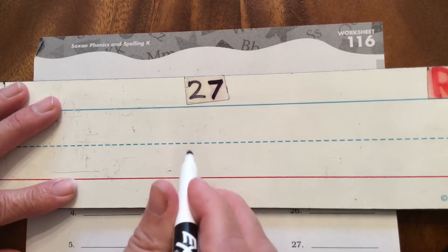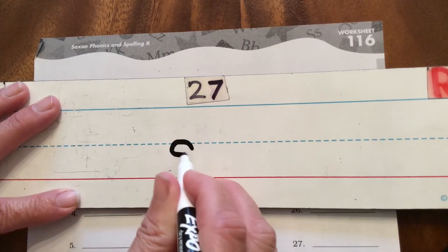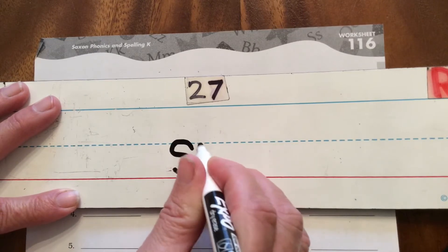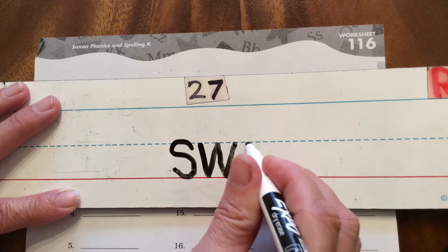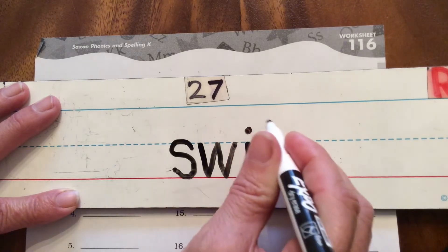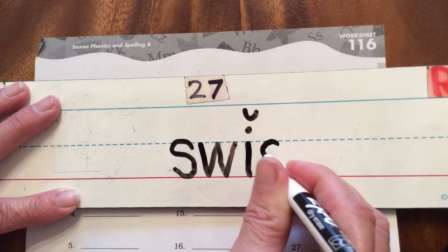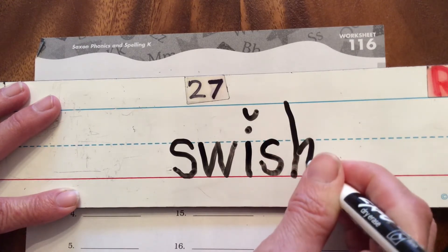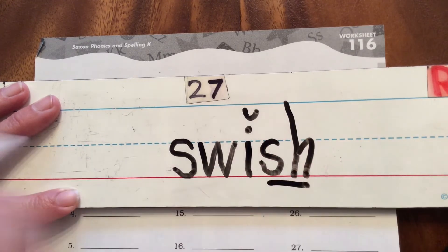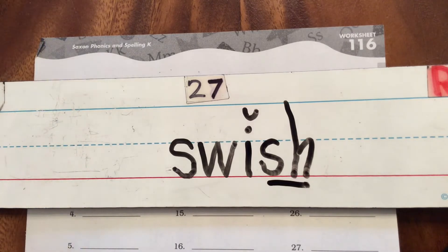I'm gonna try another one. I'm gonna try a consonant blend sw, that makes sw, and then I've got I, swish. There's my digraph right there. That'll be swish right there.